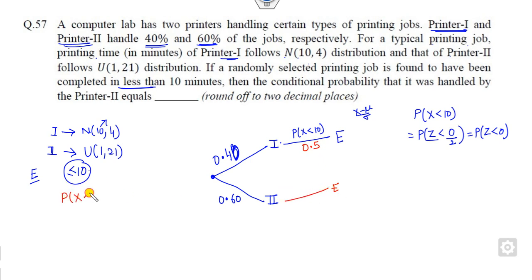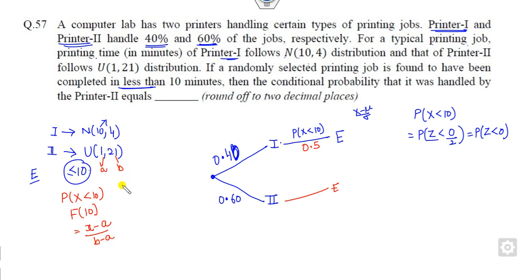For Printer 2, which follows the uniform distribution, we need P(X < 10), which is the CDF evaluated at 10. The CDF of the uniform distribution is (x − a) / (b − a). Substituting x = 10, we get (10 − a) / (b − a), giving the value for P(E | Printer 2).